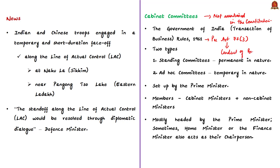The Government of India (Transaction of Business) Rules 1961 provide for the establishment of cabinet committees. These rules have been framed as per Article 77, Clause 3 of the Indian Constitution, which deals with the conduct of business of the Government of India. All executive action of the Government of India shall be taken in the name of the President. Based on the 1961 Transaction of Business Rules, cabinet committees are established. As per these rules, there are two types of cabinet committees: standing cabinet committees and ad hoc cabinet committees. Ad hoc committees are constituted from time to time to deal with specific problems and are disbanded after the task is completed. Cabinet committees are set up by the Prime Minister according to the exigencies of that particular time.